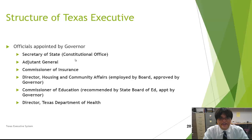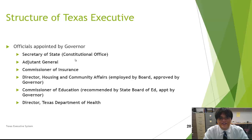The structure of the Texas executive breaks down as follows. In addition to the elected offices of the plural executive already discussed, there are also officials appointed by the governor. These include the Secretary of State, the adjutant general who oversees the military aspects of Texas, the Commissioner of Insurance, the Director of Housing and Community Affairs, the Commissioner of Education, and the Director of the Texas Department of Health.